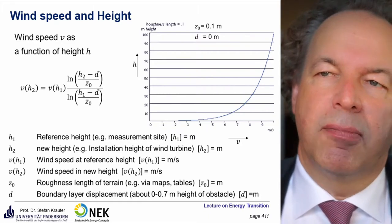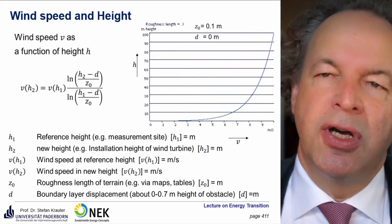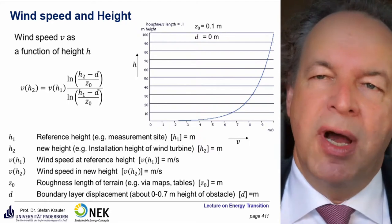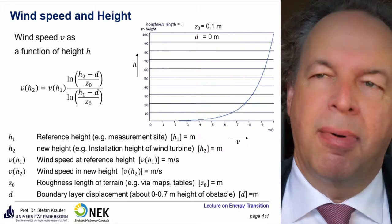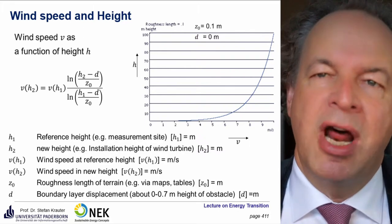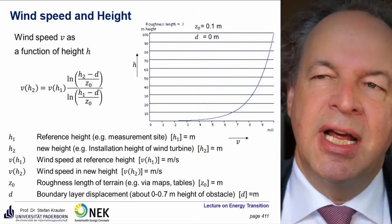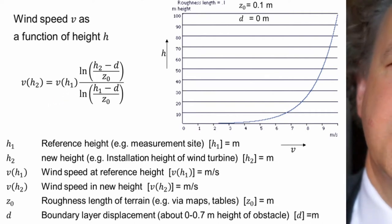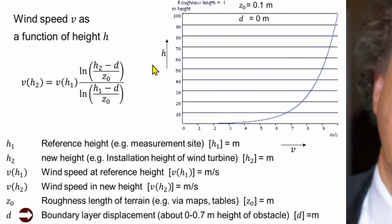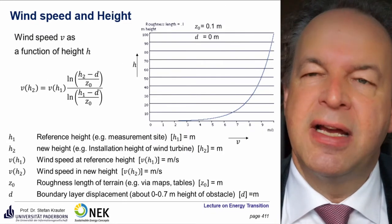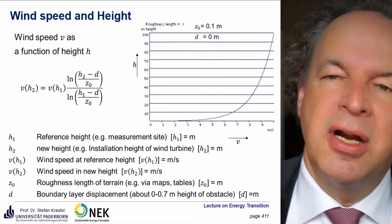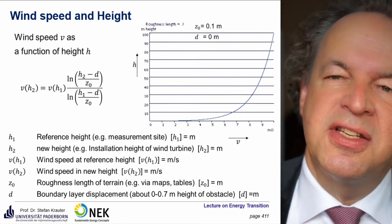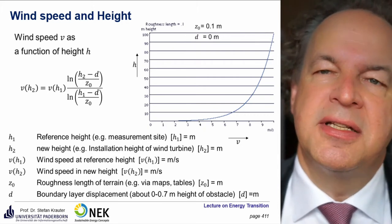The wind speed changes due to weather conditions, but also due to height. If you measure at a certain height — typically 10 meters — but modern wind turbines are quite high, for example 100 meters, you can calculate the velocity at a certain height using a logarithmic function. V at H1 is the wind velocity at 10 meters. Then you have the boundary layer displacement of 0 to 0.7 meters — at heights of 100 meters this can be neglected. Another parameter is Z0, the roughness of the terrain, obtained via maps or tables. For example, with a Z0 of 0.1 meters, if you measure 6.5 meters per second at 10 meters, you would have about 10 meters per second at 100 meters.